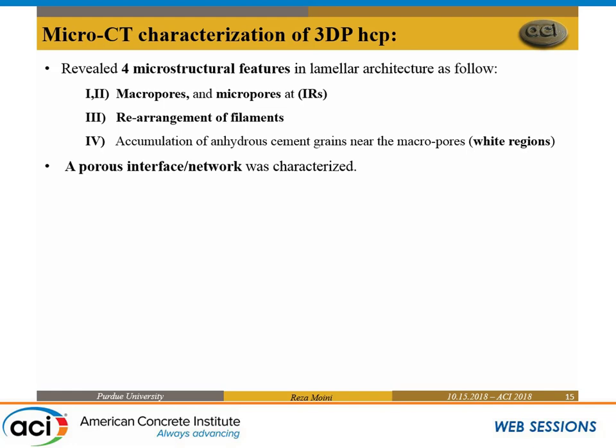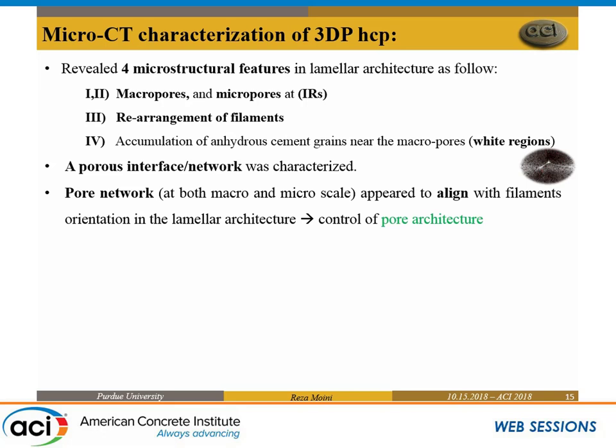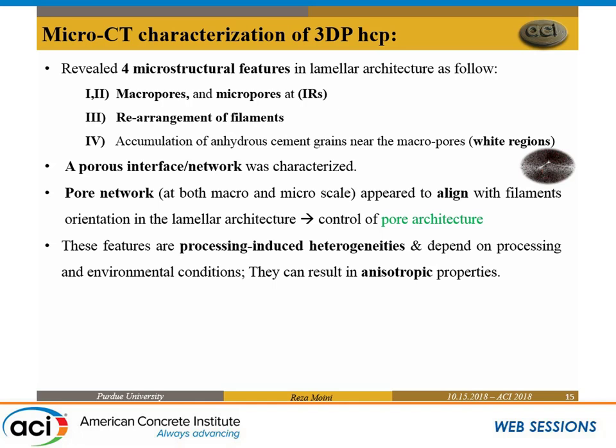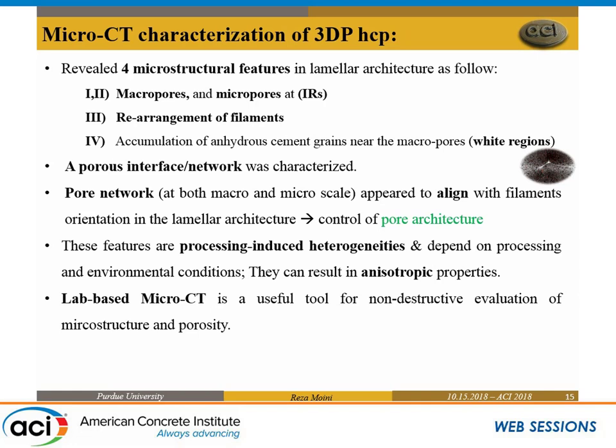In summary: we now know the interface is porous and weak, and it can be characterized with micro-CT. The pore network that forms at a variety of scales actually aligns with the direction of the filament. This allows you to control not only your solid network but also your pore network, which can be used for a variety of applications. These are processing-induced heterogeneities that depend on environmental and processing conditions, and from the literature we can agree they cause anisotropic properties compared to cast and compared to different directions. Lab-based CT is a great non-destructive way to evaluate the microstructure of 3D printed elements.